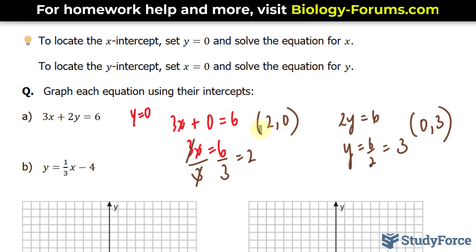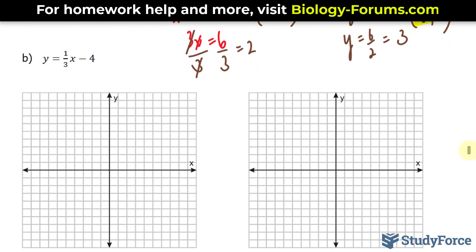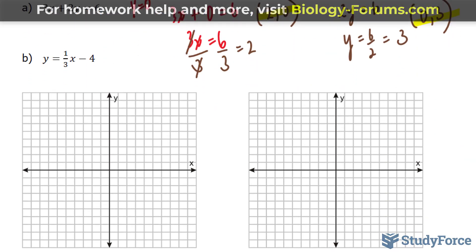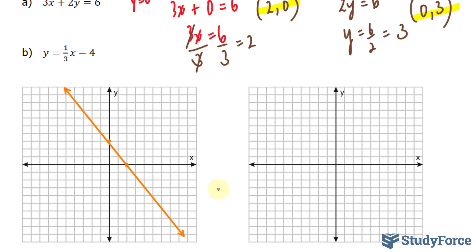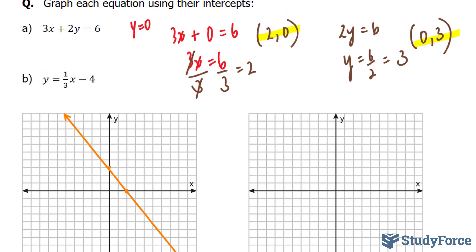I'll take these two points and plot them on the xy-plane. So (2, 0) is right here, and (0, 3) is over here. Now all I have to do is connect these points and I'm done. The line you see represented on the screen represents the equation for A.